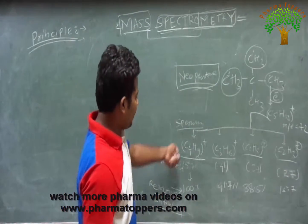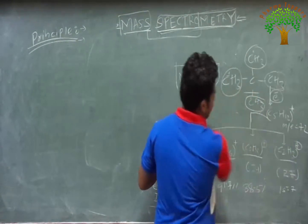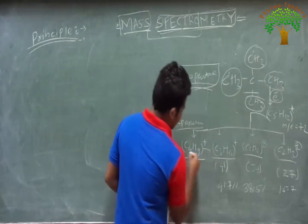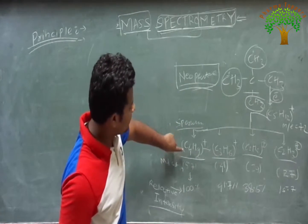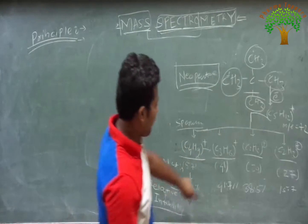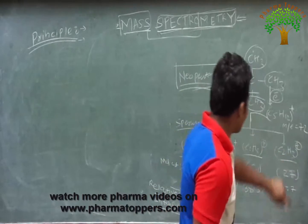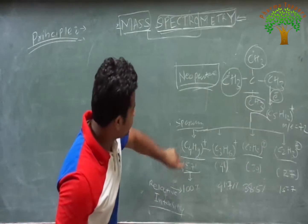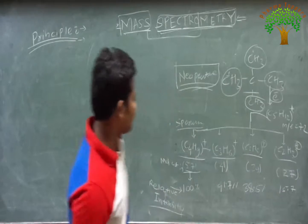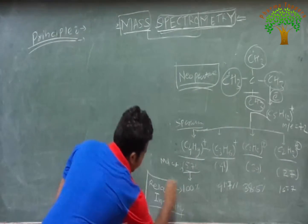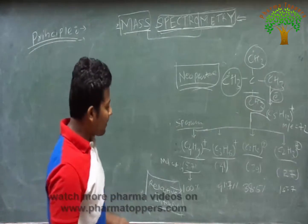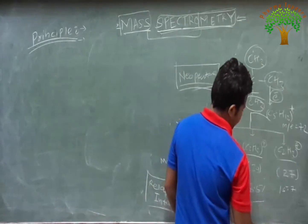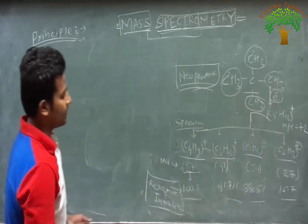How are these fragments formed? By cleaving the CH₃ groups, doing fragmentation, we get these fragments. Upon fragmentation of C₄H₉, if we remove another CH₃, we get the next fragment. Upon removal of another hydrogen, we get the next one. The molecular masses of these fragments are 57, 41, 29, and 27.